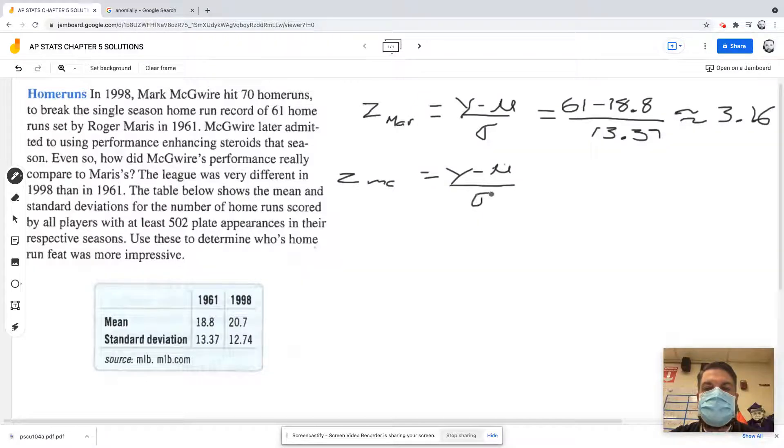What we're really doing is where are they further from the mean or not. So he had 20.7 minus... oh I did that backwards. I got to put his number, how many home runs he had. Y is what he had. So we're going to say 70...